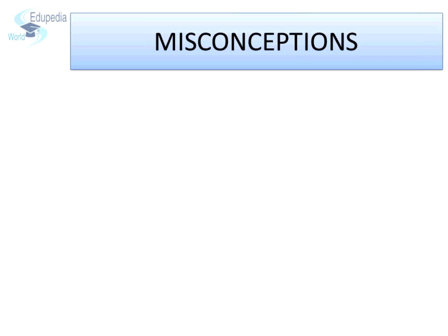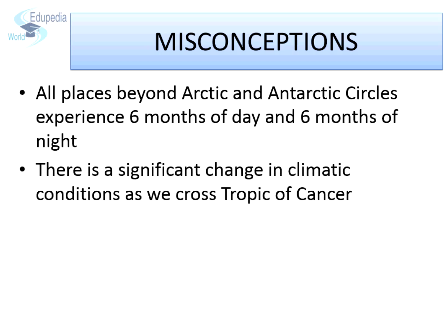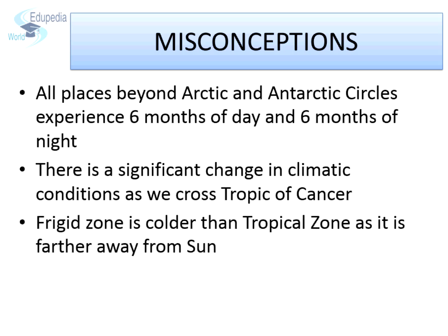Before we begin our exploration about the heat zones, let us look at some of the common misconceptions that exist regarding the heat zones. First, few people believe that places beyond Arctic and Antarctic circles experience six months of day and six months of complete darkness. Some believe that there is a significant change in climatic conditions as we cross the Tropic of Cancer or Tropic of Capricorn. Some people think that the frigid zone is colder than the tropical zone as it is farther away from the sun. Well, all these are misconceptions. During this session we will come to know what the real facts are.